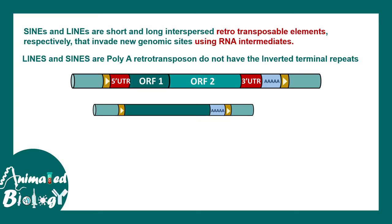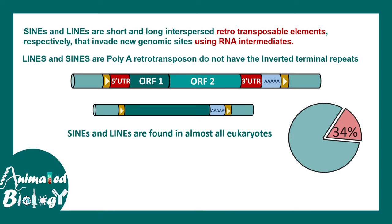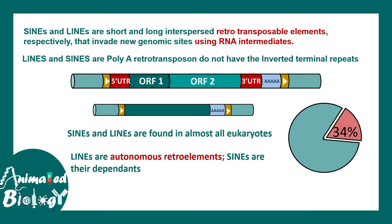SINEs and LINEs also move via an RNA intermediate. They are pretty important and abundant in eukaryotes — almost 34% of the genome contains LINEs and SINEs. LINEs are autonomous, but SINEs are actually dependent on LINEs for jumping from one location to another. They are variable in size; mouse LINEs are around 6,000 base pairs whereas human SINEs are somewhere around 248 base pairs. Simply put, LINEs are bigger and SINEs are smaller.